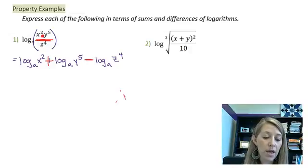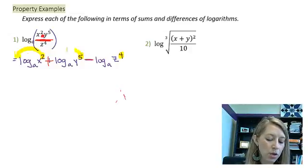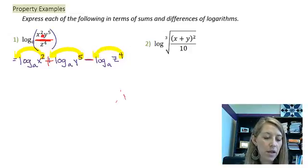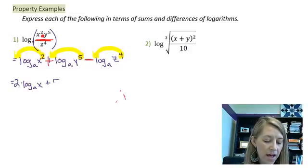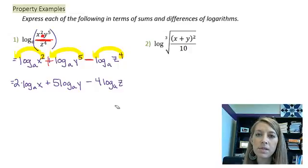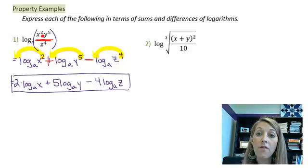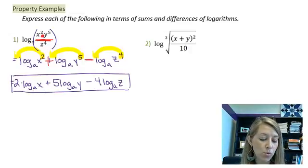Now we see that we have exponents on each of these, so we're going to utilize the power rule property and bring those exponents down in front. This gives me 2 times log base a of x plus 5 times log base a of y minus 4 times log base a of z. We have expressed each of these in terms of sums and differences, and that's our final answer. We cannot simplify further because we have multiple variables where we have bases of a and our arguments range from x, y, and z.